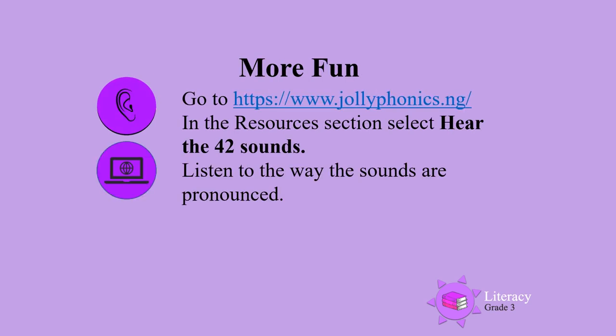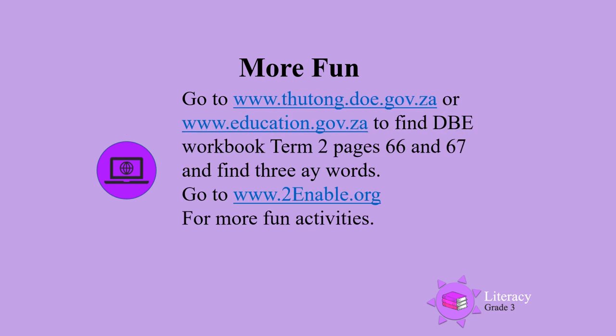For more fun, go to the Jolly Phonics website. In the resources section, select 'Hear the 42 Sounds' and listen to the way the sounds are pronounced. You can also go to the DBE website and find the DBE workbook, term 2, pages 66 and 67, and find three A-Y words — words that have A and Y at the end that say A. Go to www.toenable.org for more fun activities. Thanks.